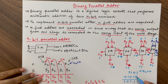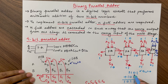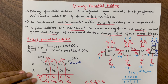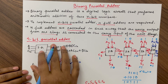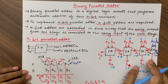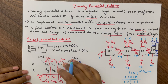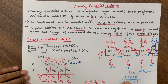Let us check whether this is correct. The first binary number 1101 equals 8+4+1 = 13 in decimal, and the second number 1010 equals 8+2 = 10. So 13 plus 10 is 23. Our result 10111 equals 16+4+2+1 = 23. It is correct. So this is how we design a 4-bit parallel adder using 4 full adders. We can design an n-bit parallel adder using n full adders. I hope this topic is clear to you. Thank you.